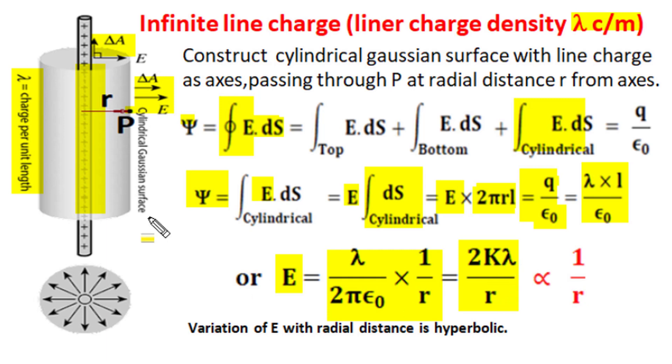For different values of radial distance it is clear that electric field is inverse of radial distance and this proportional relation E proportional to 1 by r clearly indicates that variation of electric field for this infinite line charge has a hyperbolic relation with radial distance.